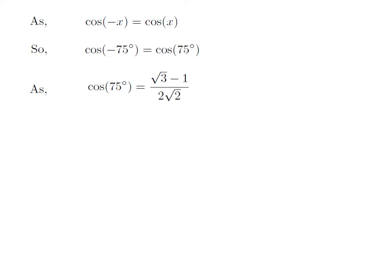We know the value of cosine of 75 degree is equal to square root of 3 minus 1 upon 2 into square root of 2.